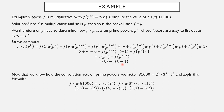Applying our formula: f star mu of 2 cubed is tau of 3 minus tau of 2; f star mu of 3 to the 4th is tau of 4 minus tau of 3; f star mu of 5 cubed is tau of 3 minus tau of 2. Now tau of 3 is 2 and tau of 2 is also 2, so tau of 3 minus tau of 2 equals 0. Tau of 4 is 3 and tau of 3 is 2, so tau of 4 minus tau of 3 equals 1. And again tau of 3 minus tau of 2 equals 0. Therefore the product is 0 times 1 times 0 equals 0. So f star mu of 81,000 is 0.